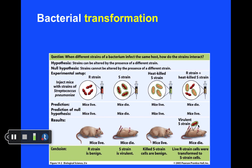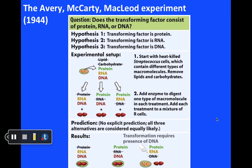Bacteria can simply take up DNA from their surrounding environment and use that DNA as part of their genetic material. Other experiments took off based on Griffith's work. Here we're looking at the work of Avery, MacLeod, and McCarty in the early-to-mid 1940s. They basically said, using this Strep pneumoniae system, let's test which type of molecule serves as the genetic material.